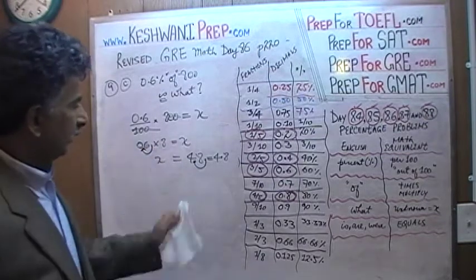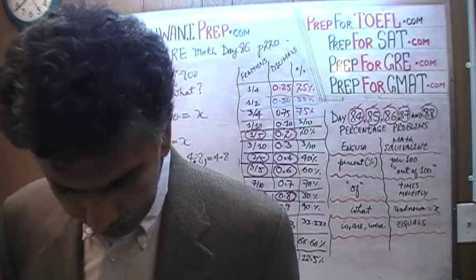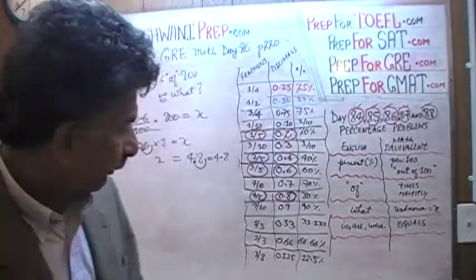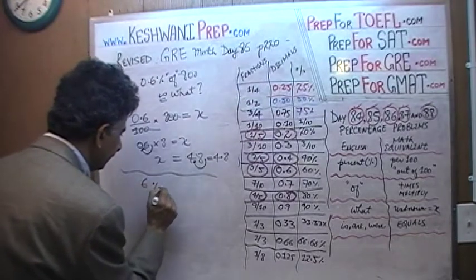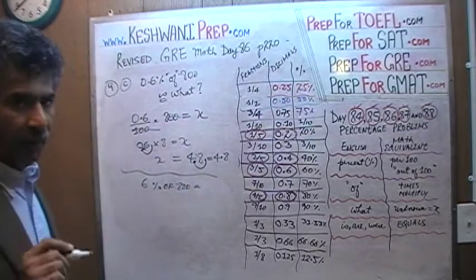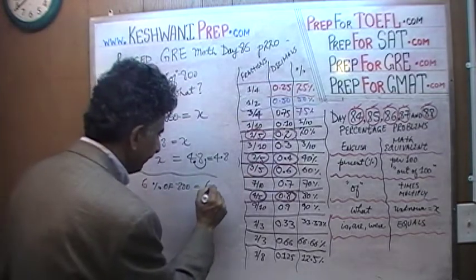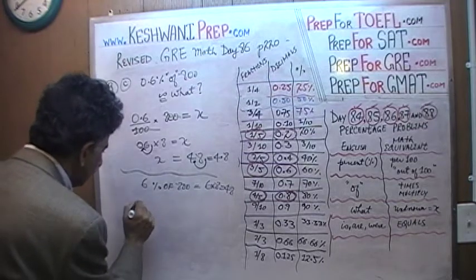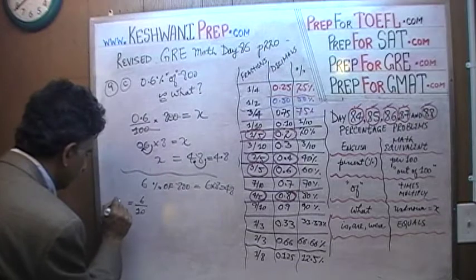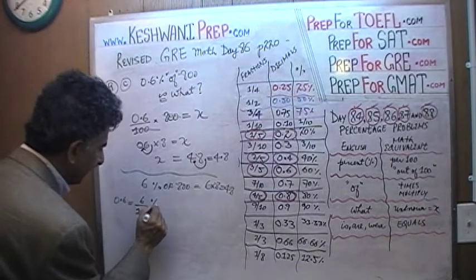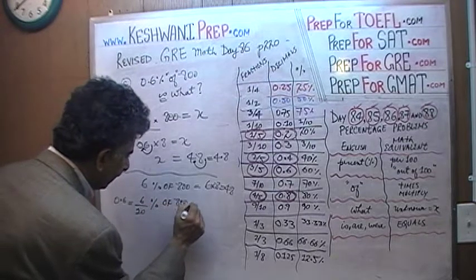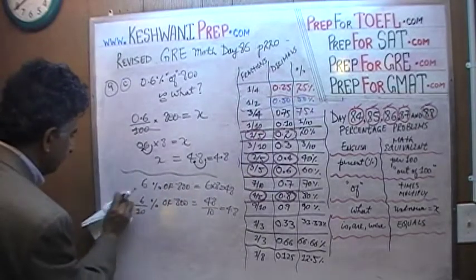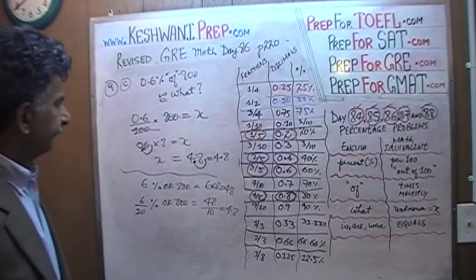We have to move the decimal place one spot — 4.8. That's your answer: 4.8. How do we verify this? We know that 6% of 800 — well, 1% of 800 is 8, therefore 6% of 800 is 6 times 8, which is 48. Since 0.6 means 6 over 10, you take a tenth of that: 48 divided by 10 equals 4.8. Voilà — that's your answer, 4.8.